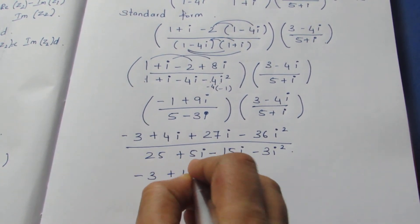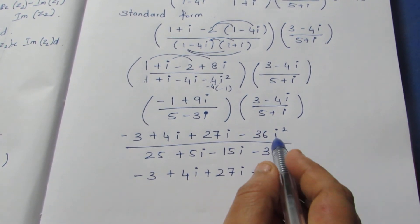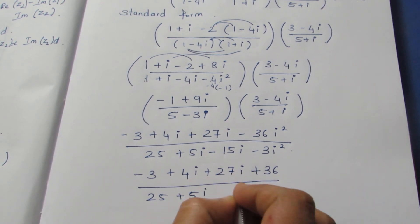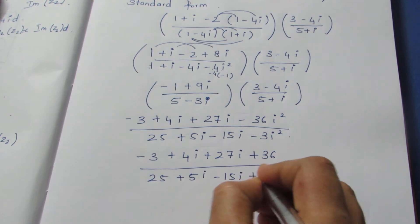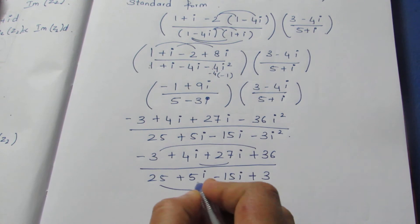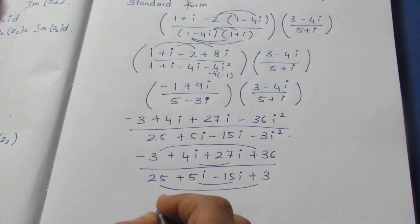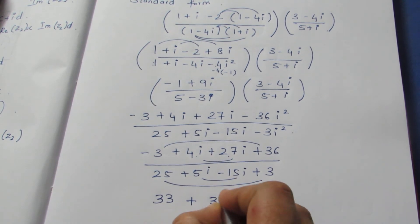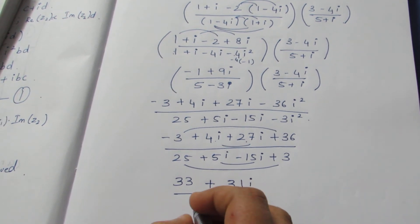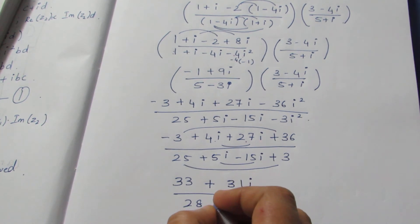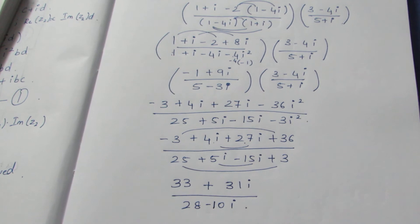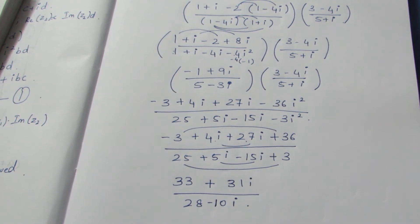Solving the like terms — first 4i+27i, and −36 × (−1) becomes +36. On the denominator: 25+5i−15i+3. Combining real and imaginary parts: the numerator becomes 33+31i, and the denominator becomes 28−10i. So we now have (33+31i)/(28−10i).